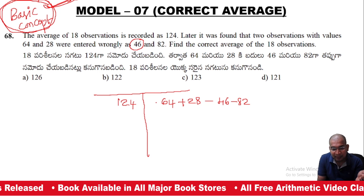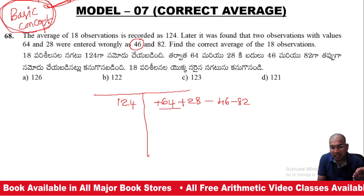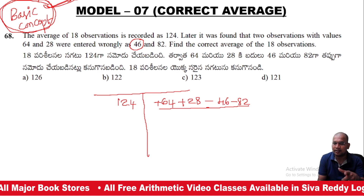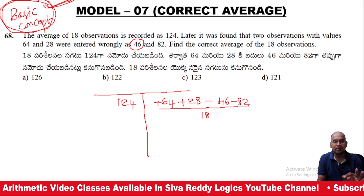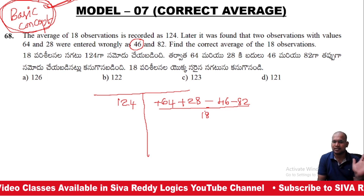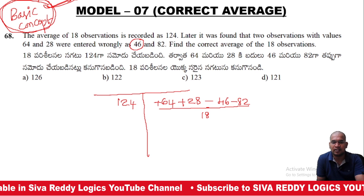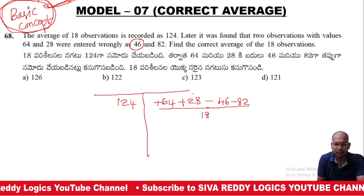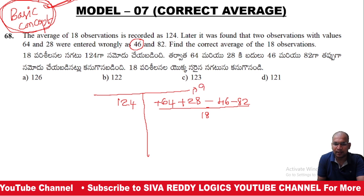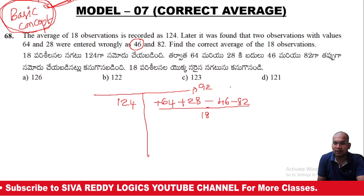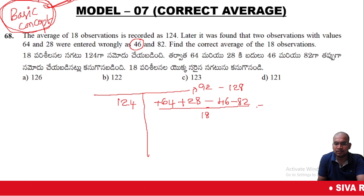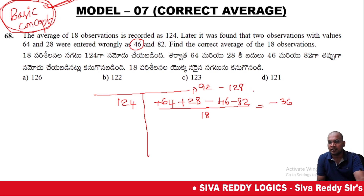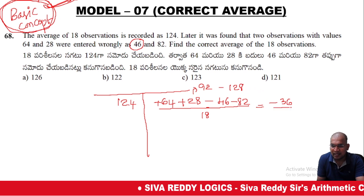Correct average equals original average plus (sum of correct values minus sum of wrong values) divided by number of observations. Correct values are 64 and 28, sum = 92. Wrong values are 46 and 82, sum = 128. So the net difference is 92 minus 128 = minus 36, divided by 18.